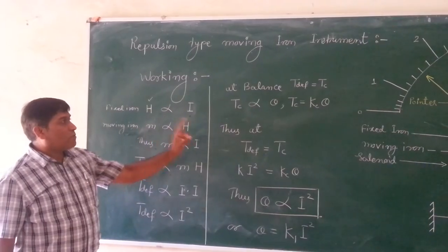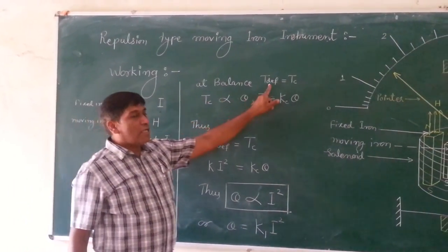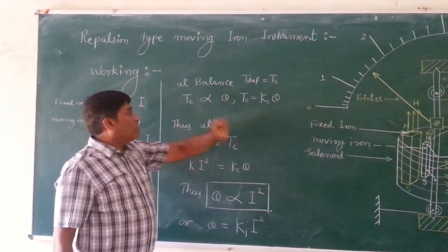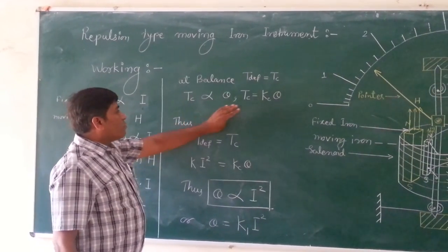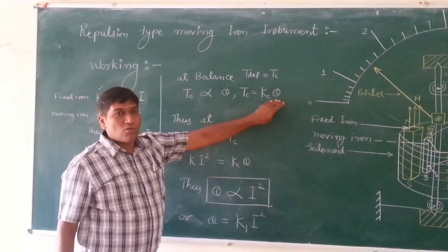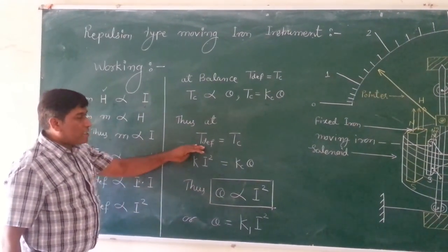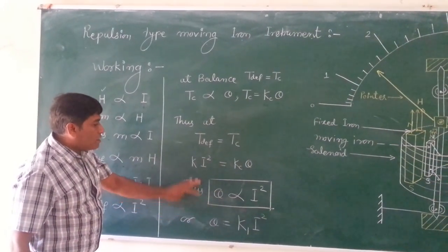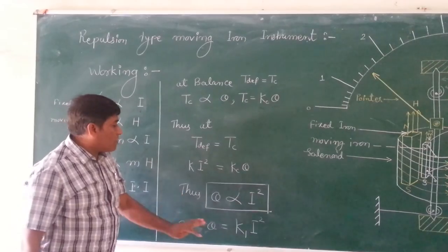Now, if the instrument is spring controlled, at balanced condition, deflecting torque is equal to controlled torque. And as we are knowing, this controlled torque by the spring is Kc into theta. So, at balanced condition, this Ki square must be equal to Kc theta.